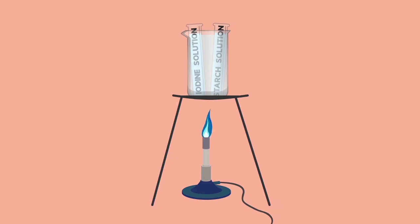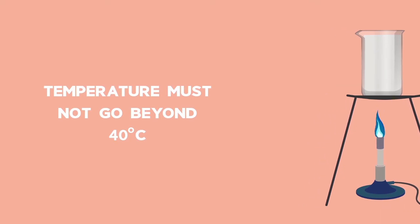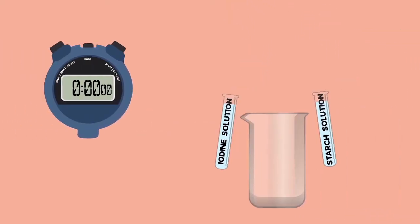An iodine clock experiment can be used to illustrate the effect of temperature on the rate of reaction. We find that the higher the temperature, the shorter the time of reaction.